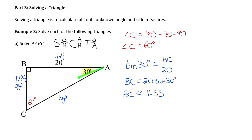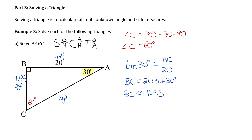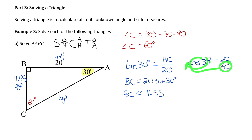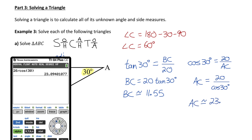The only missing piece is the hypotenuse side AC. We could use Pythagorean theorem, but let's practice SOHCAHTOA. Knowing the adjacent side and using reference angle 30, cosine involves adjacent and hypotenuse. Cosine of 30 degrees equals the adjacent side 20 divided by the hypotenuse AC. Solving for AC — multiply it to the left and divide cos 30 to the right — gives an approximate answer of about 23.09 units. The triangle is now fully solved.